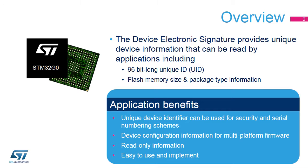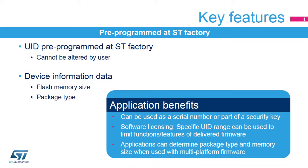Applications can benefit from a unique identifier that can be used as a serial number or as part of a security key. It can also be used to manage software distribution and licensing features based on the UID. The unique identifier and other device information are pre-programmed at the ST Factory and cannot be altered by users. Multi-platform firmware can use the UID to determine package type and memory size for managing application functions and features.